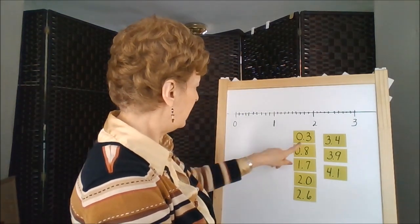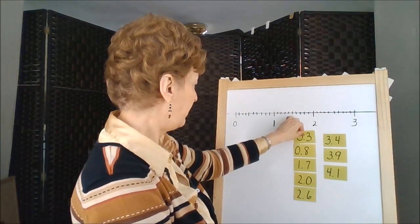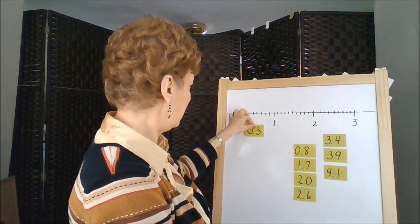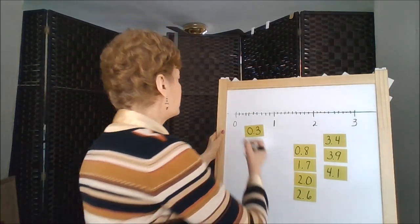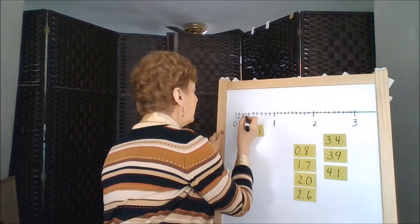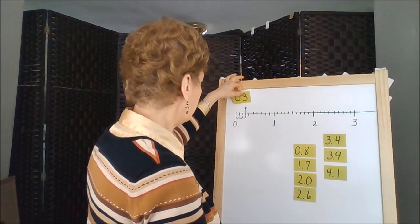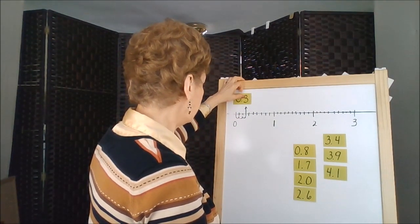The 0.03 would be definitely within this decade and we would be three jumps over. One, two, and three. So our 0.03 would be placed here. Our 0.3 would be placed here.